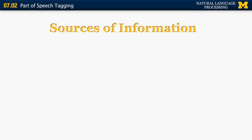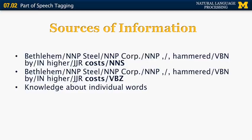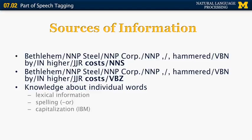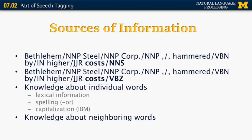What sources of information can you use to label words? Knowledge about individual words is useful — whether 'costs' is typically a noun or a verb. You can also look at lexical information from a dictionary, spelling (words ending in '-or' are likely nouns like 'suitor' or 'vector'; words ending in '-est' are likely superlative adjectives), and capitalization (e.g., 'IBM' in capital letters is likely an organization). You can also use knowledge about neighboring words — the previous word, the word after, or the previous two words.